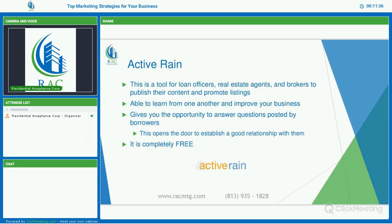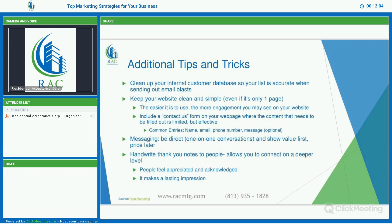ActiveRain is a tool for loan officers, real estate agents, and brokers to publish their content and promote listings. You're able to learn from one another and improve your business by collaborating on this platform. It also gives you the opportunity to answer questions posted by borrowers, which opens the door to establish a good relationship with them. And the best part — it's completely free.